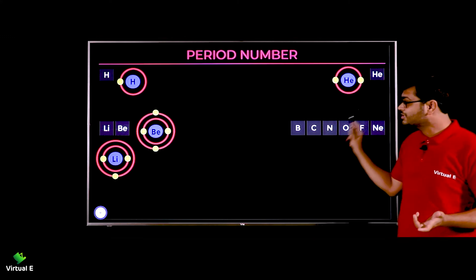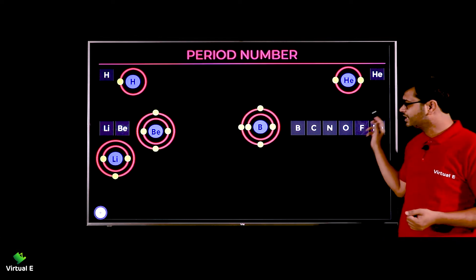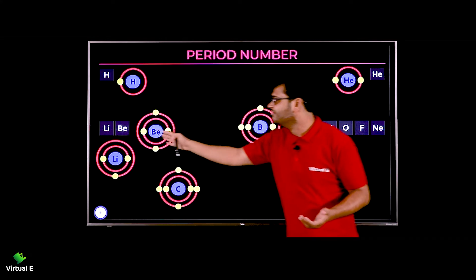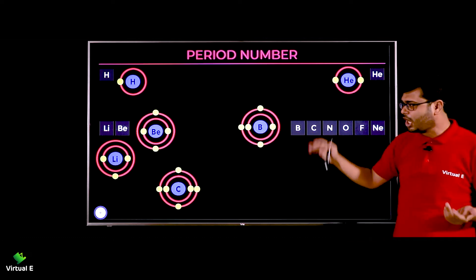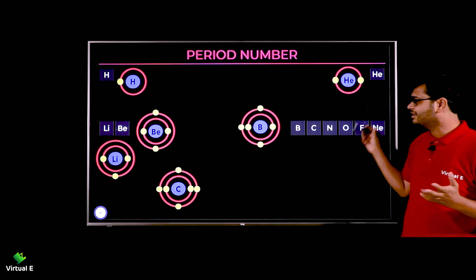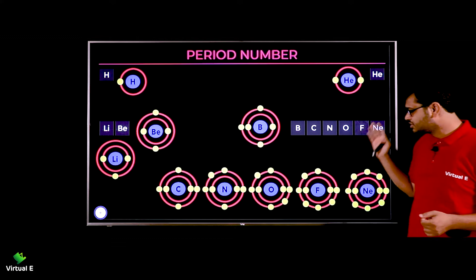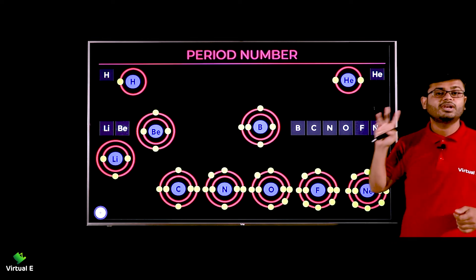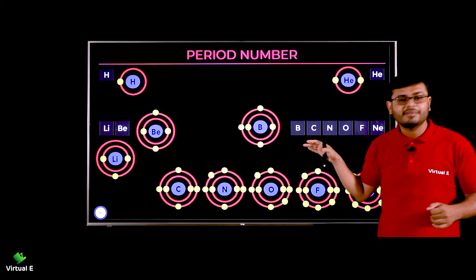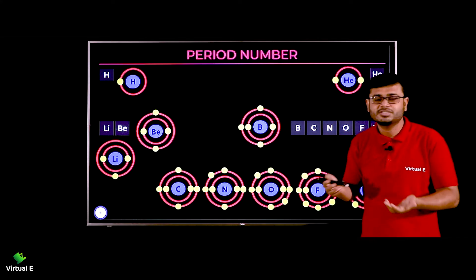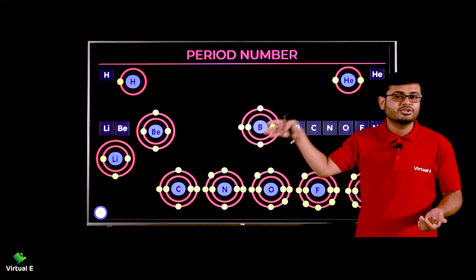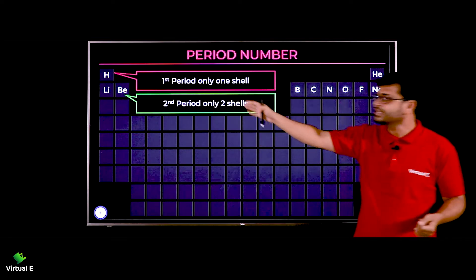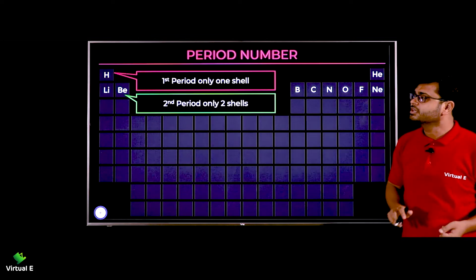Beryllium also has two shells. Boron also has two shells. As we go from lithium (3) to beryllium (4) to boron (5) to carbon (6), one electron is added each time to the outer shell, not the inner one. From lithium to neon, all elements have only two shells — so second period means two shells.